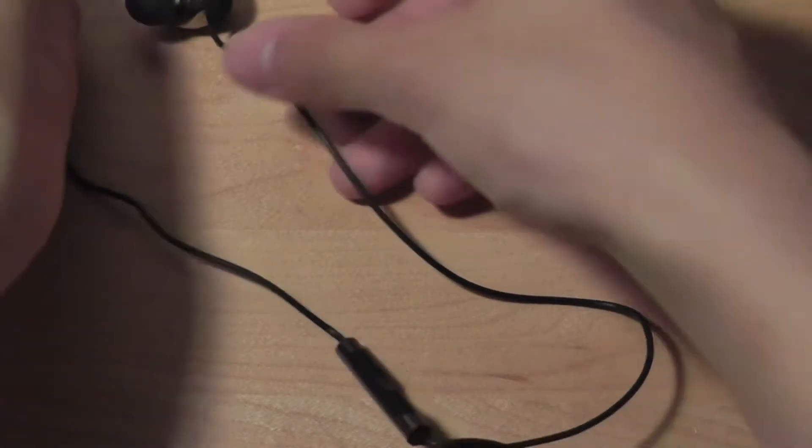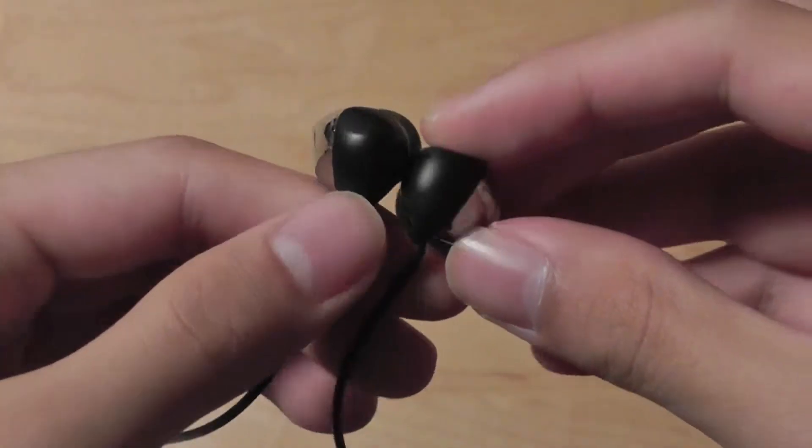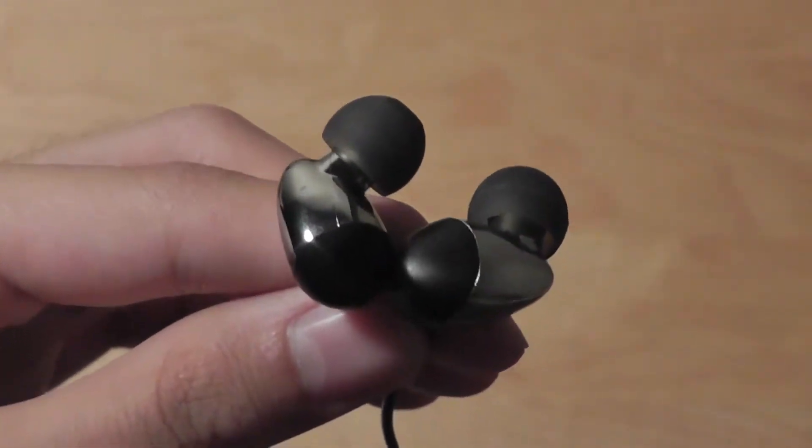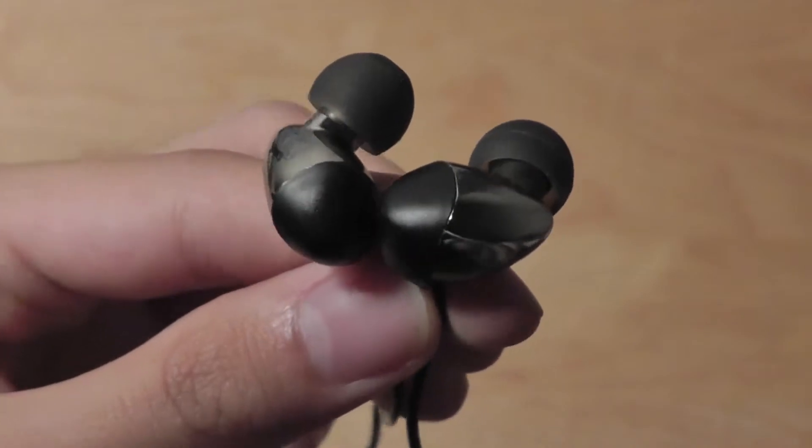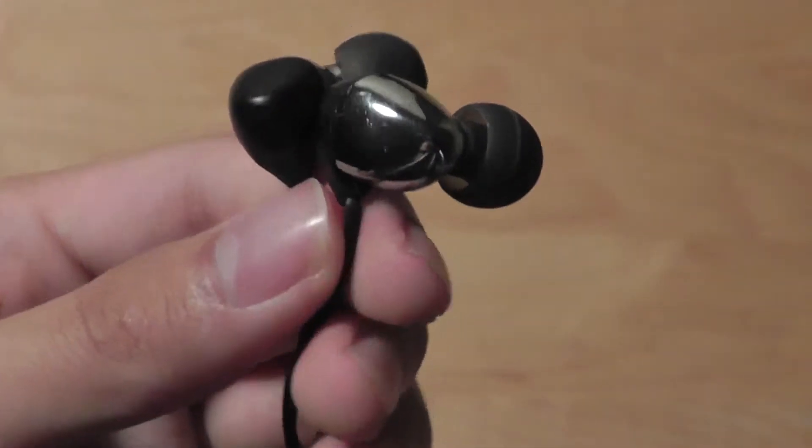The earbuds themselves are definitely noise isolating. The gel tips fit pretty snugly into your ears, and as a result they provide a comfortable, tight, and secure fit. They're not going to fall out even if you do a little jogging or running around. Although these earphones are not water resistant, they are pretty rugged.